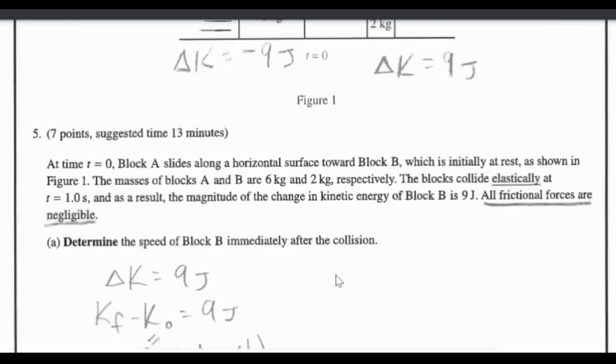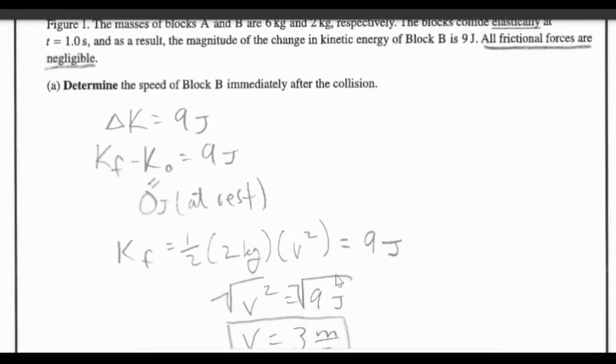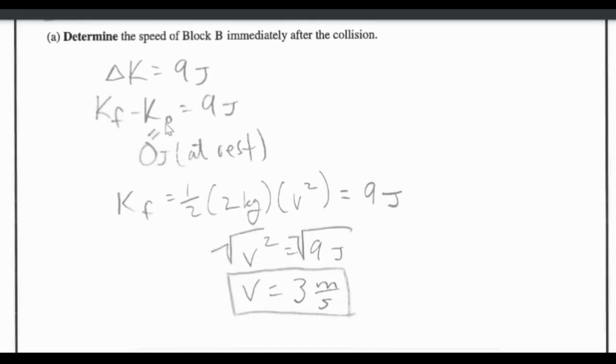So determine the speed of block B immediately after the collision. Block B was initially at rest, so basically the 9 joules equals the KF, so 1 half mv squared, which comes out very nicely mathematically. 1 half times 2 is just 1, so it's basically v squared equals 9 joules. Square root of 9 equals 3 meters per second. So hopefully that one was pretty simple for you.